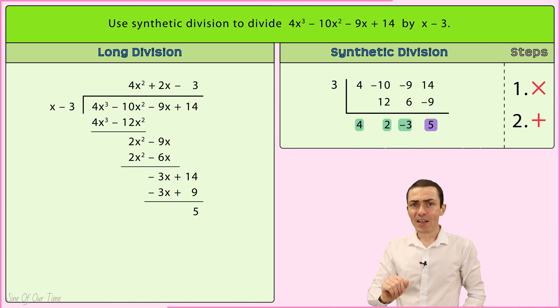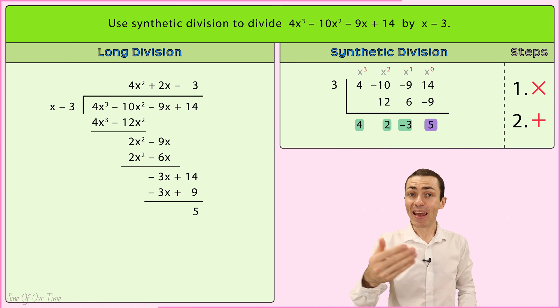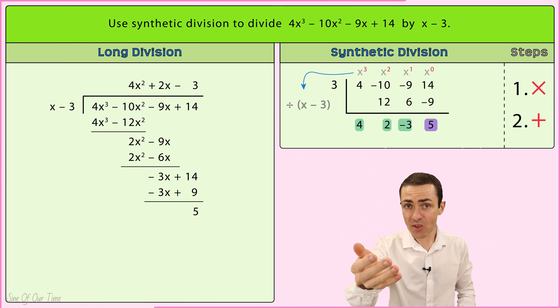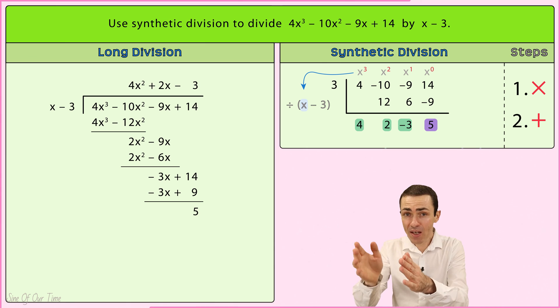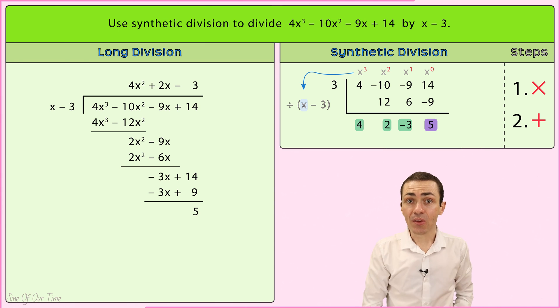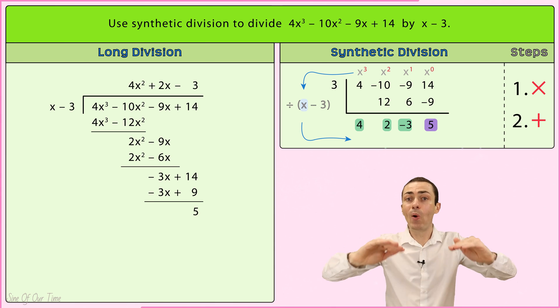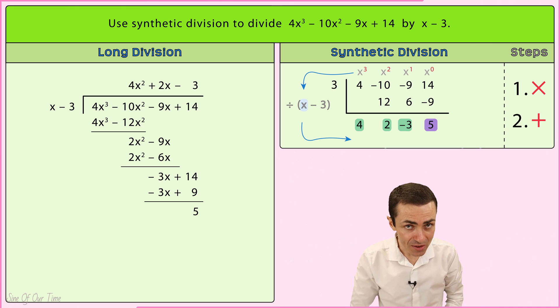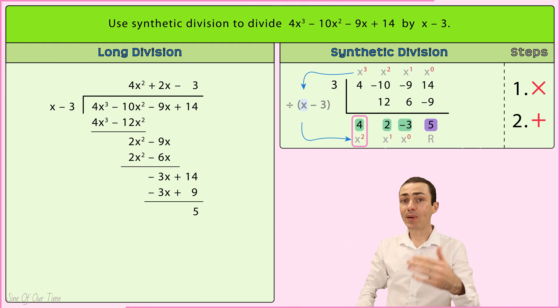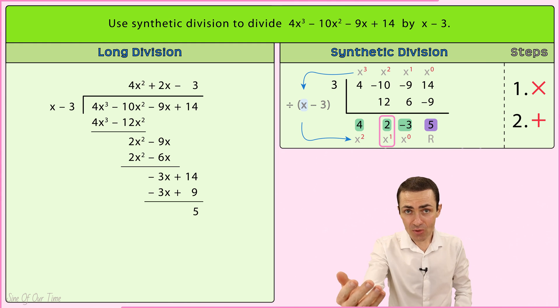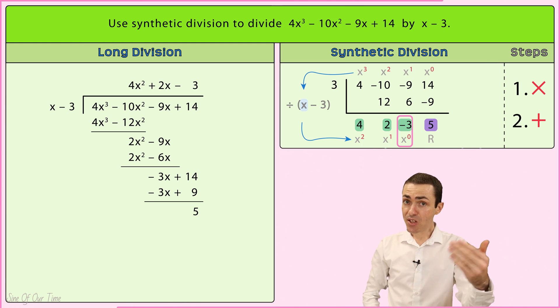Bear with me for a minute here. Since each of the terms in the dividend is divided by x in the divisor of x minus 3, the degree of each of the corresponding terms in the quotient is always one less than that of the dividend, which means that the quotient is 4x squared plus 2x minus 3, while the remainder is 5.